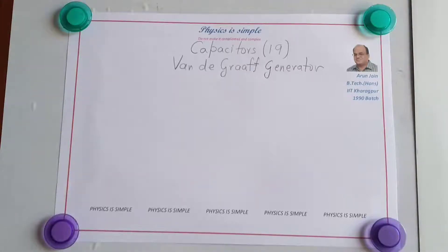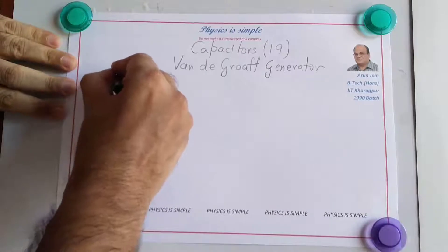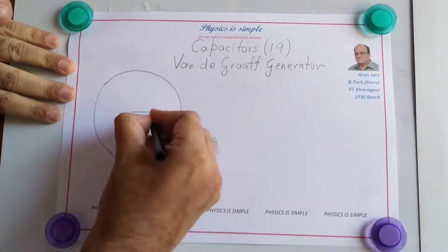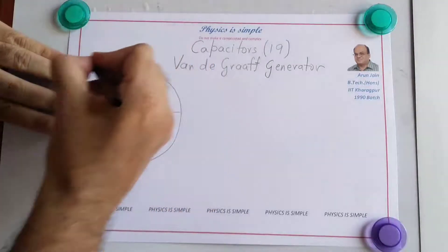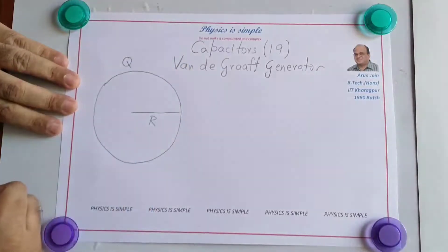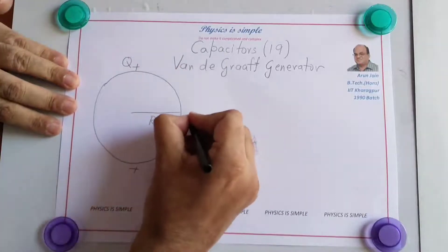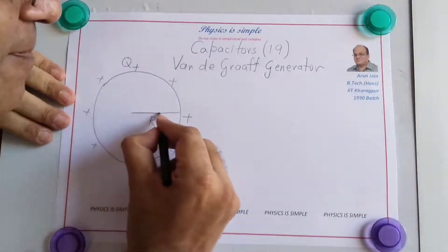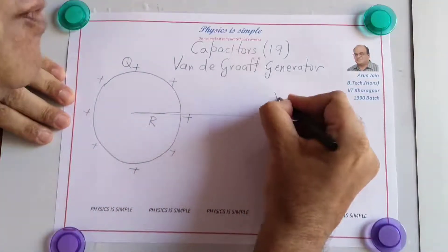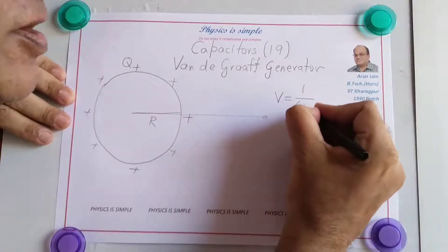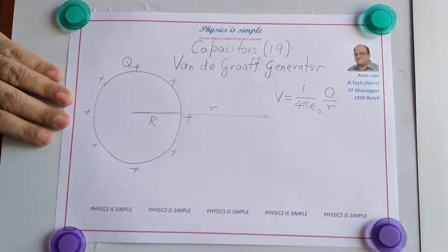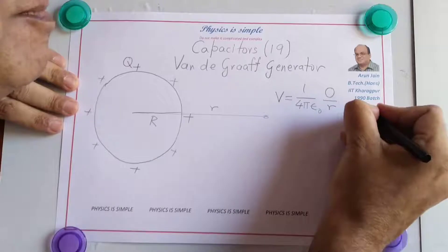In this lesson, we are going to understand the Van de Graaff Generator. If we have a conducting spherical shell of radius R, having a charge Q, this charge will distribute uniformly on the outer surface, and the potential at any point outside is given by V = (1/4πε₀) × Q/r, where r is the distance of that point from the center. This is valid for r ≥ R.